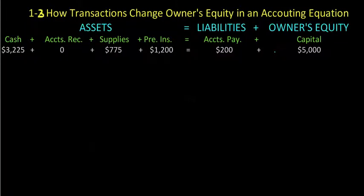How transactions change owner's equity in an accounting equation. You can see we have the accounting equation and the accounts under each of the three classifications. We've added one new one under assets: accounts receivable. That's where we capture what customers owe us when they buy on account, meaning they didn't have the money at that time and they don't pay us in cash - they'll pay us at some point in the future.